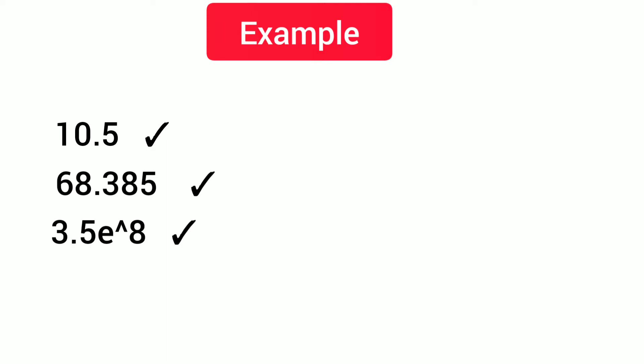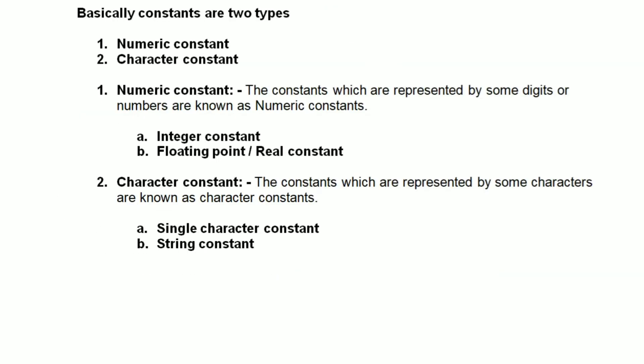For example, 3.5e8 is a number in exponential form, so it is also a floating point or real constant. Similarly, 3.5e-8 is also a floating point constant. Next, we have character constant — the constant which is represented by some characters is known as a character constant.